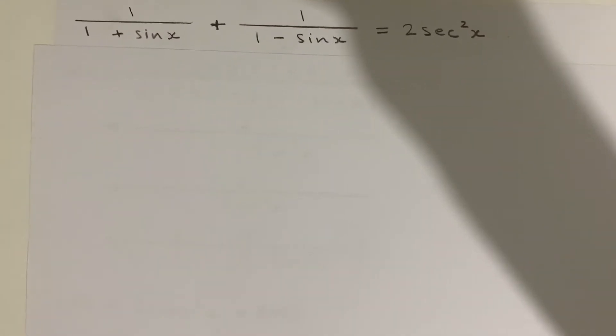This is a trigonometric identity equation, so we have to prove that the left hand side is equal to the right hand side. So we'll manipulate the left hand side.